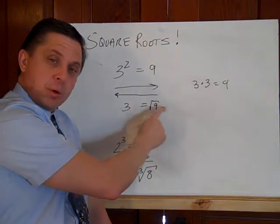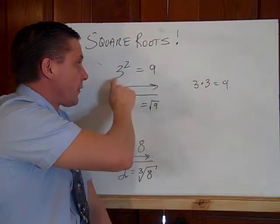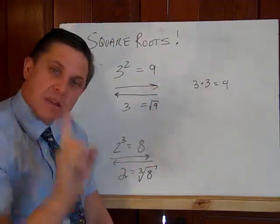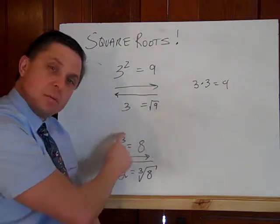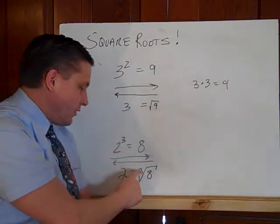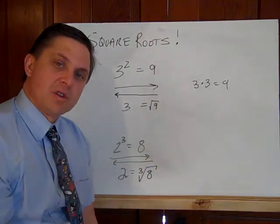But we have to realize the square root's purpose is to take us backwards here. So if three squared is nine, the square root of nine is three. Likewise, when the power is not two, we can say two cubed is eight, the cube root of eight is two. You notice how all the numbers match up, and these are inverse operations of each other.